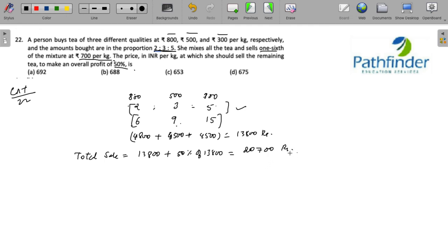Now this is the total sale required of which one sixth of the mixture is sold at 700 per kg. So what is the total quantity of the mixture? 6 plus 9, 15 plus 15, 30 kg. And one sixth of this will be 5 kg. So 5 kg is sold at 3500 rupees.